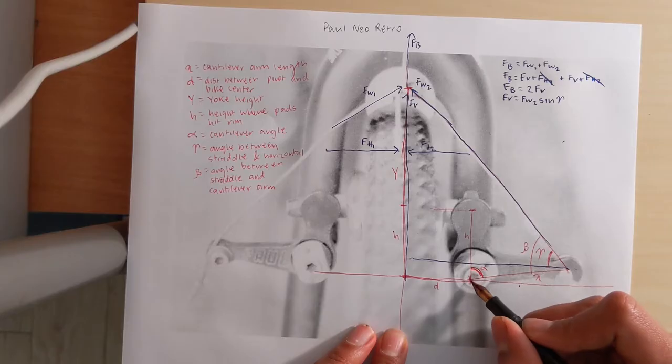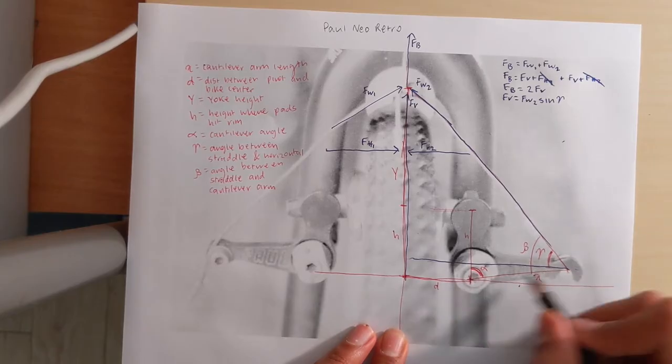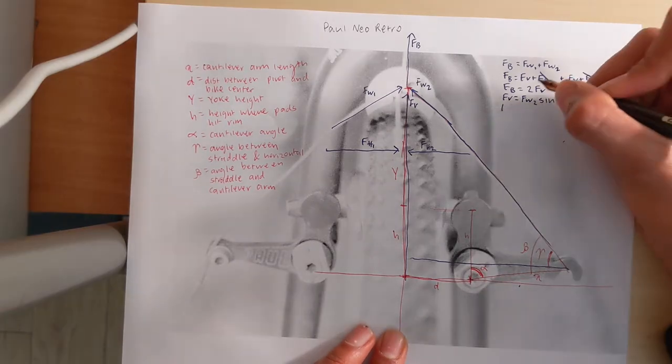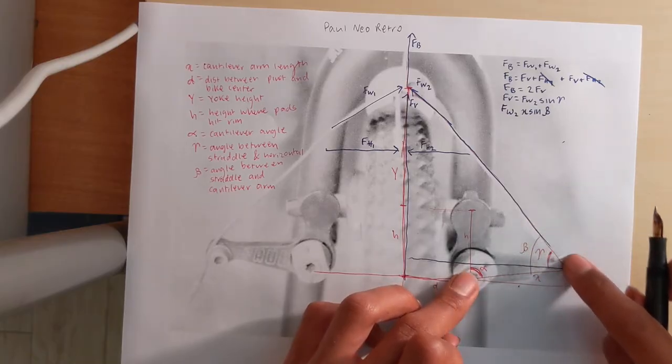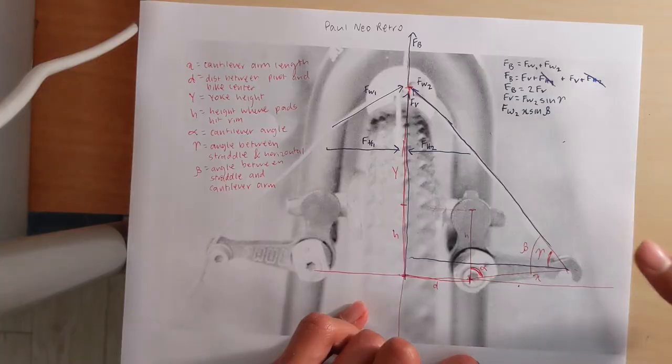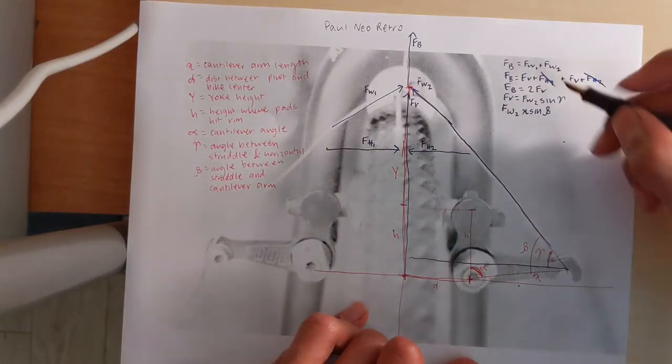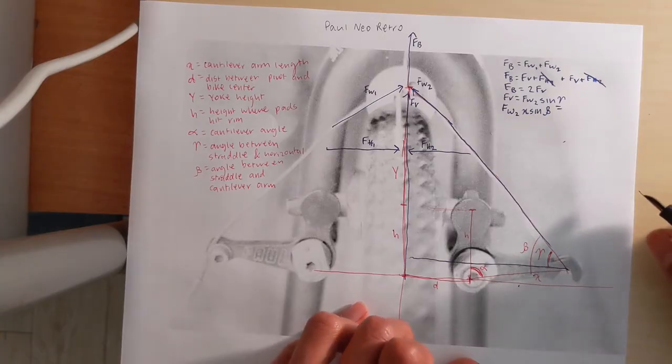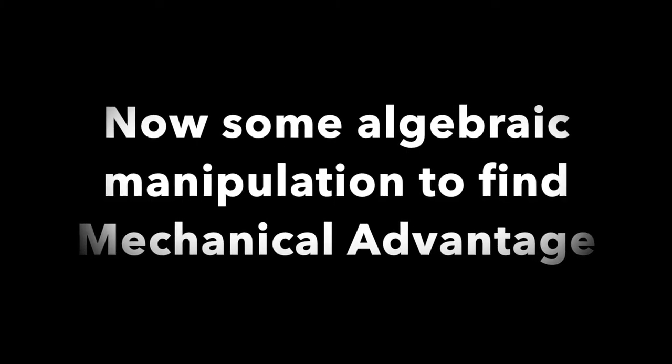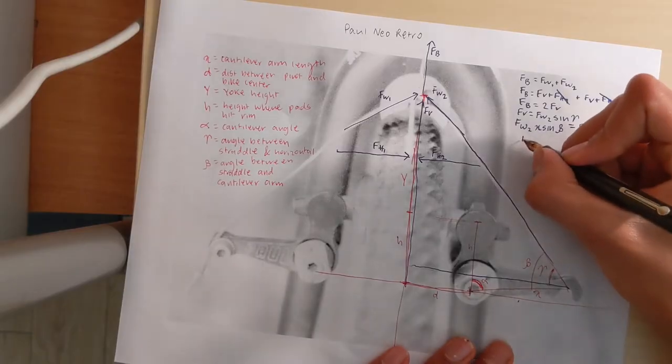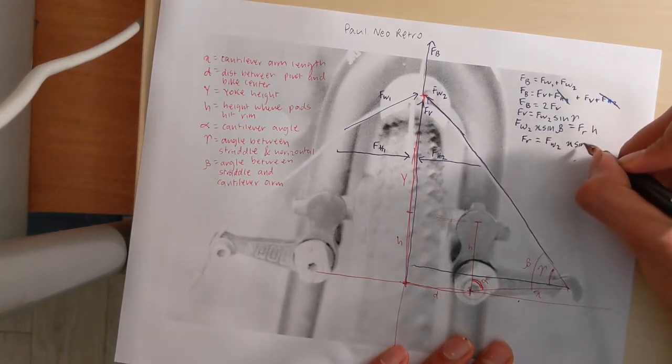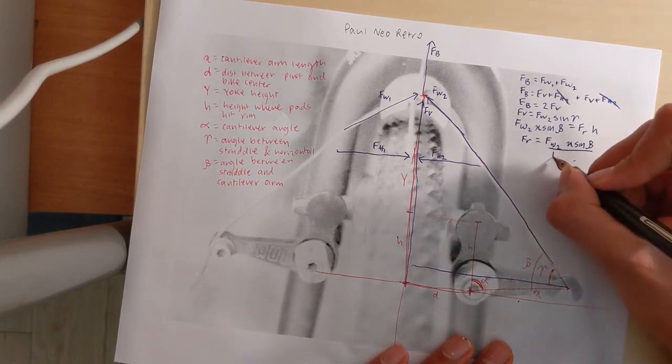We know we have an equilibrium of torque, so we can say that the force exerted by the straddle wire on the cantilever arm, which is Fw2 times x sine of beta, is the exact same torque as that exerted by the brake pad onto the rim. So we're going to use Fr as the force onto the rim. So Fr times h, and it's at 90 degrees so sine of 90 is 1. So Fr times h.